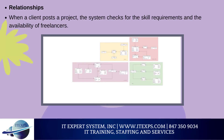Relationships: When a client posts a project, the system checks for the skill requirements and the availability of freelancers. The system then creates a team of freelancers who will collaborate on the project, which is now divided into phases. This system works as a supervisor, looking for the best collective that will work on a project, and assigning different project phases to different freelancers depending on availability and skill level. Collectively, this is how the data model can look.